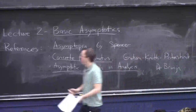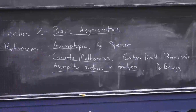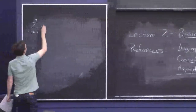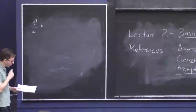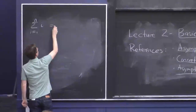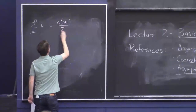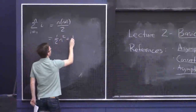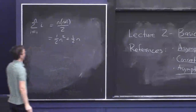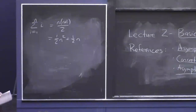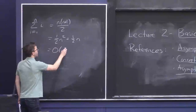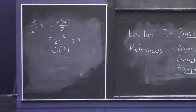We've all encountered basic quantities like the sum as i goes from one to n of i — the sum of the first n natural numbers. We all know the formula: this is n times n plus one over two, or to expand it, a half n squared plus a half n. And if you were going to use big O notation here, you would write that this is order n squared. This is the kind of stuff we're going to be talking about, but at a more advanced level.